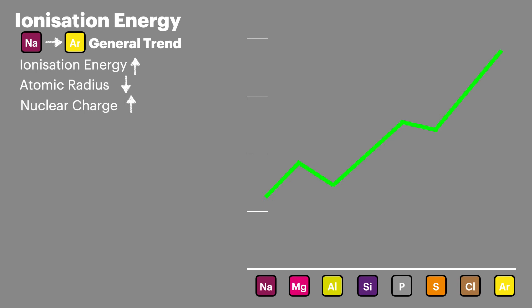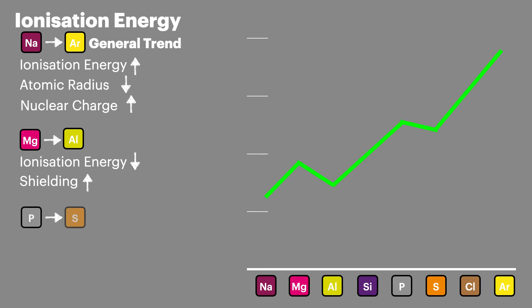But there are two anomalies from this trend. The first one is between magnesium and aluminium — the ionization energy decreases because the shielding increases as you move from the S orbital through to the P orbital. The next anomaly is between phosphorus and sulfur, where the ionization energy decreases because the electron repulsion increases. This is because we are now pairing electrons in P orbitals.